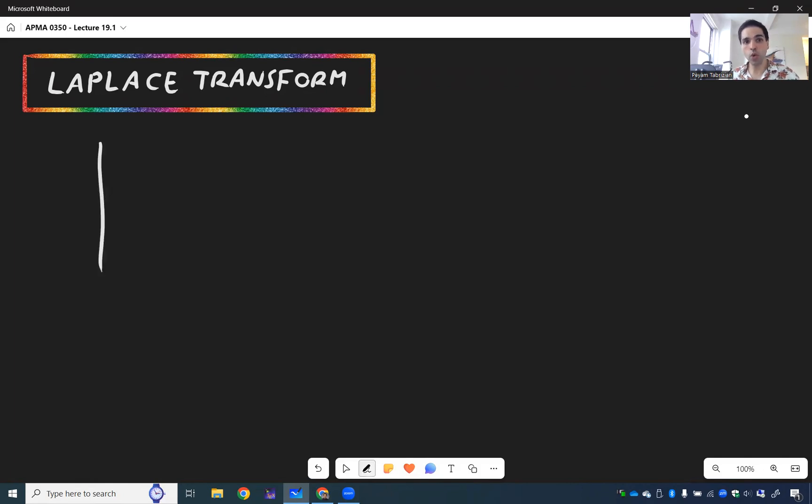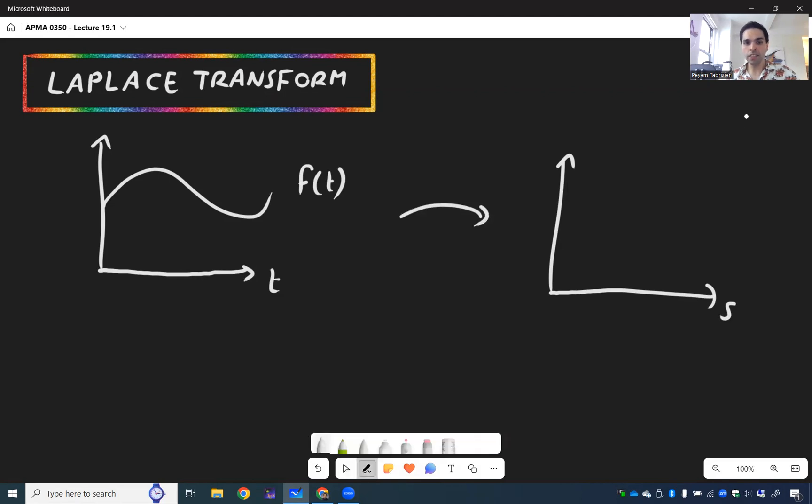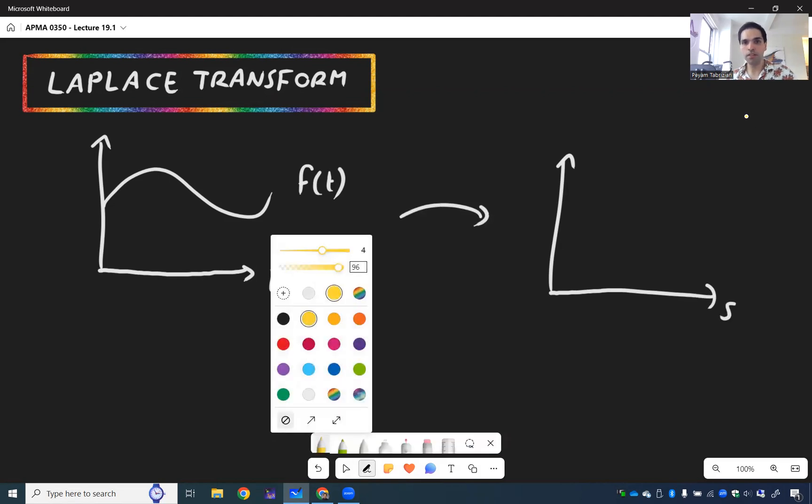What it is, it's a tool that transforms functions of time, so think f of t, into functions of a frequency variable s. So you start with the function f of t, you apply this transform L, so think beautiful L, and what you end up getting is a function of s that we call L of f of t.